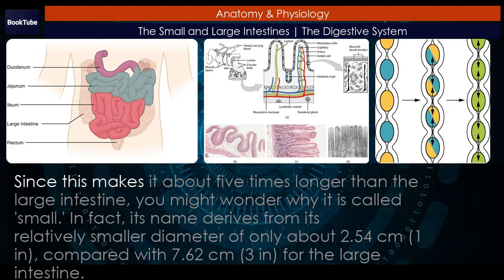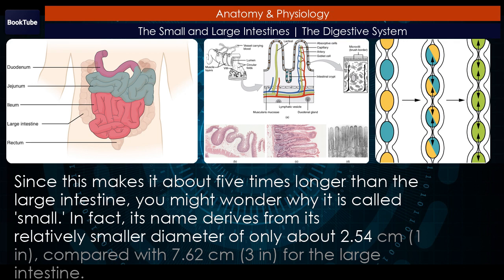Since this makes it about five times longer than the large intestine, you might wonder why it is called small. In fact, its name derives from its relatively smaller diameter of only about 2.54 centimeters (1 inch), compared with 7.62 centimeters (3 inches) for the large intestine.